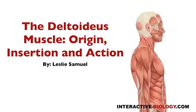Hello and welcome to another episode of Interactive Biology TV where we're making biology fun. My name is Leslie Samuel and in this video I'm going to be talking about the deltoideus muscle, which is the first and the most complicated or complex of the intrinsic shoulder muscles.